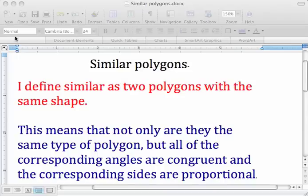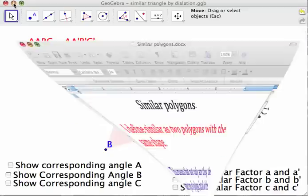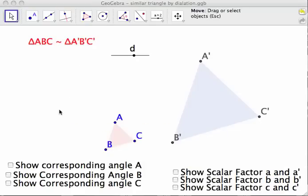So what does that mean? Let's take a look at GeoGebra. These are two similar triangles. This is triangle ABC is similar to triangle A prime, B prime, and C prime.